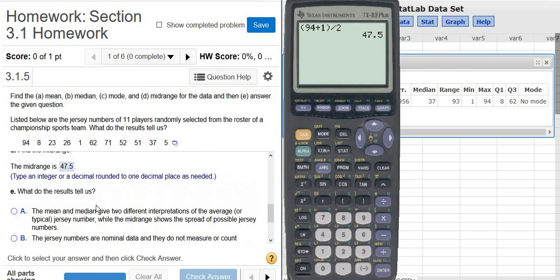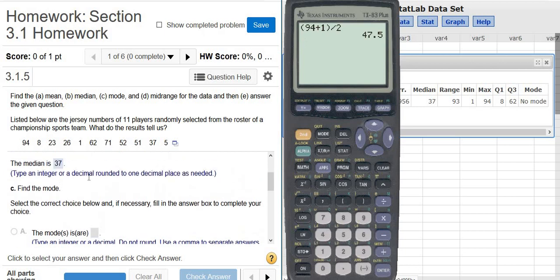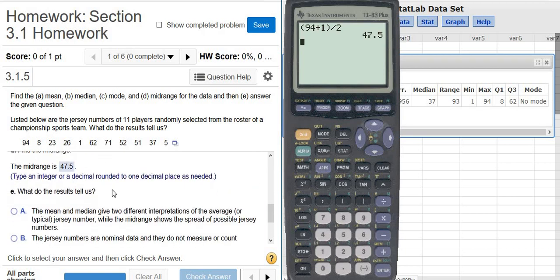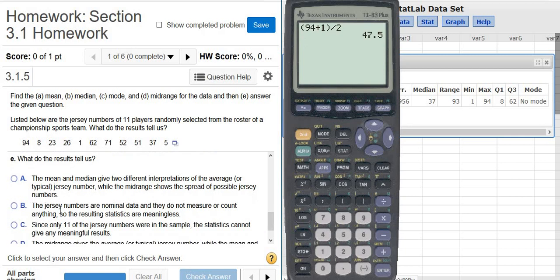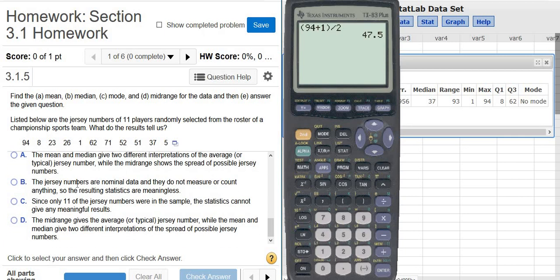What do the results tell us? Well, these are jersey numbers. So the median and the mean aren't really very helpful. Neither is the midrange.